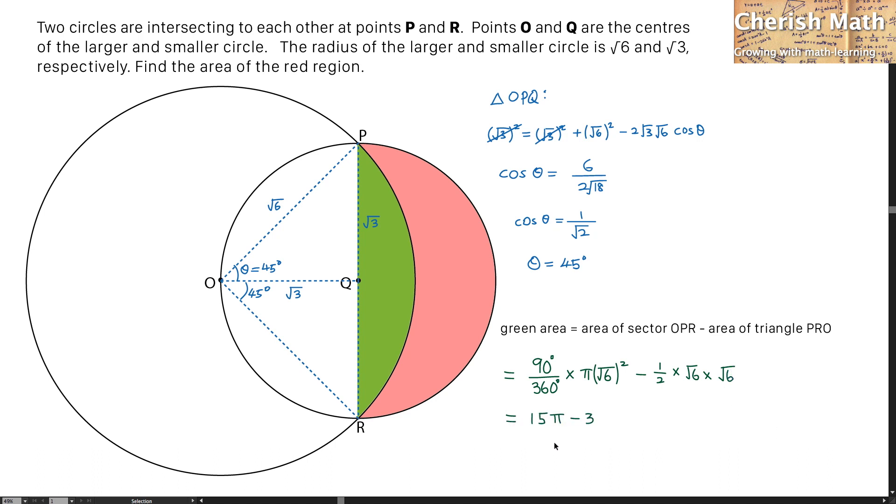Now, to work out the value of the red area, I use the area of semicircle PR, this part I'm highlighting here, minus the green area that I got earlier.